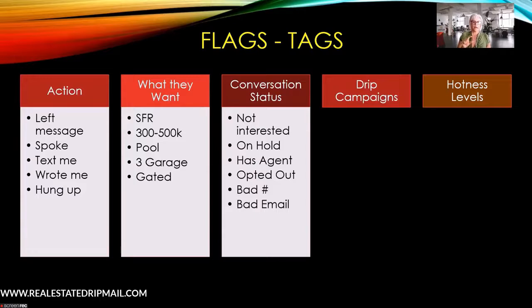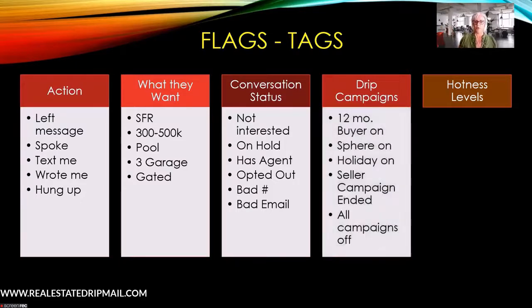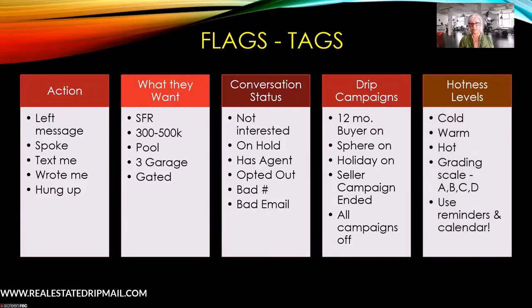For conversation status, anything related to phone or email — I start it with 'phone' so it all lines up. You can flag if they opted out of text, if the number was bad, and so on. For drip campaigns, it's just for your own at-a-glance knowledge. I also have a tag that says 'campaign over,' which gets added automatically when the campaign ends, so I can easily search for people who aren't currently on a campaign.